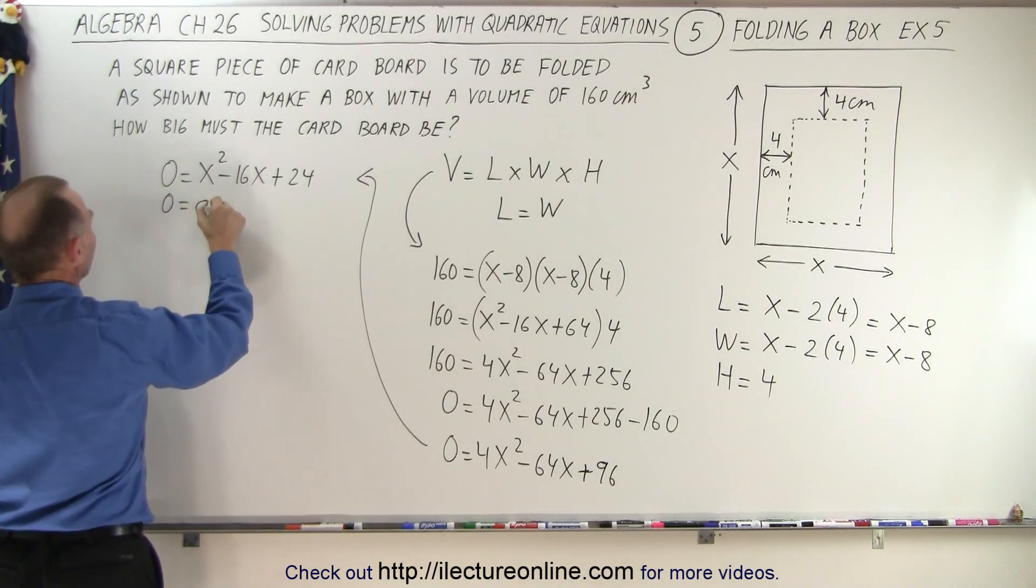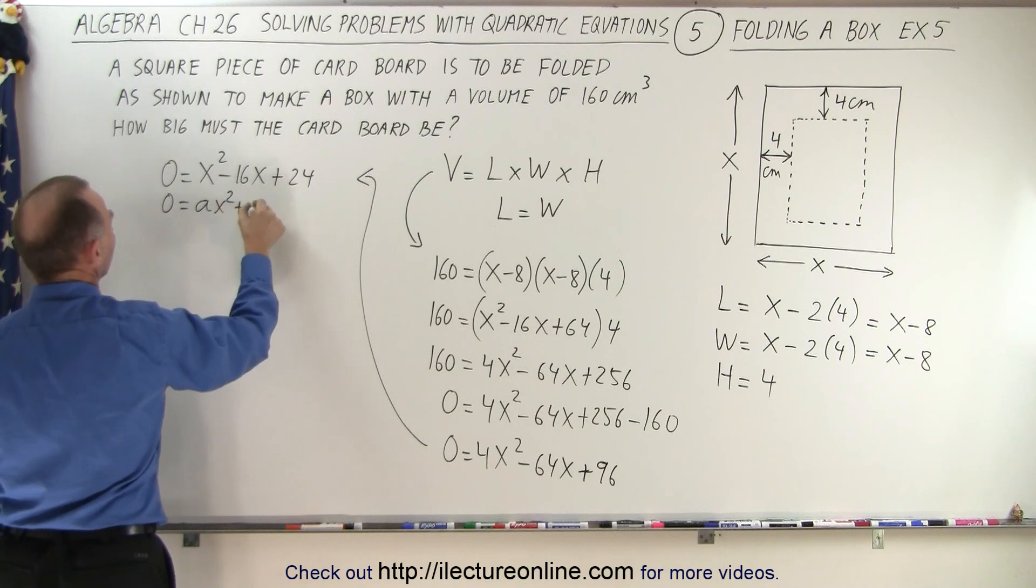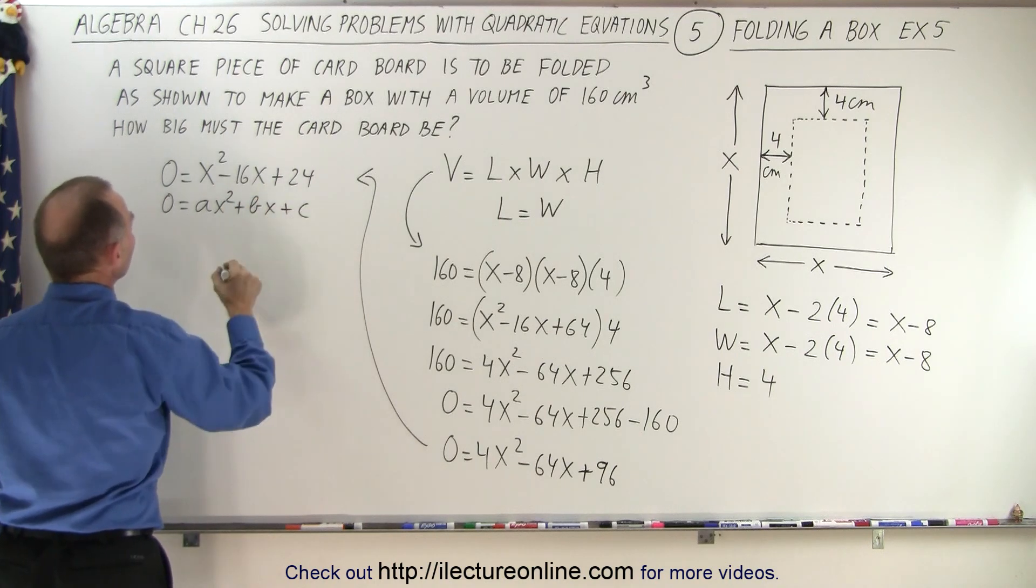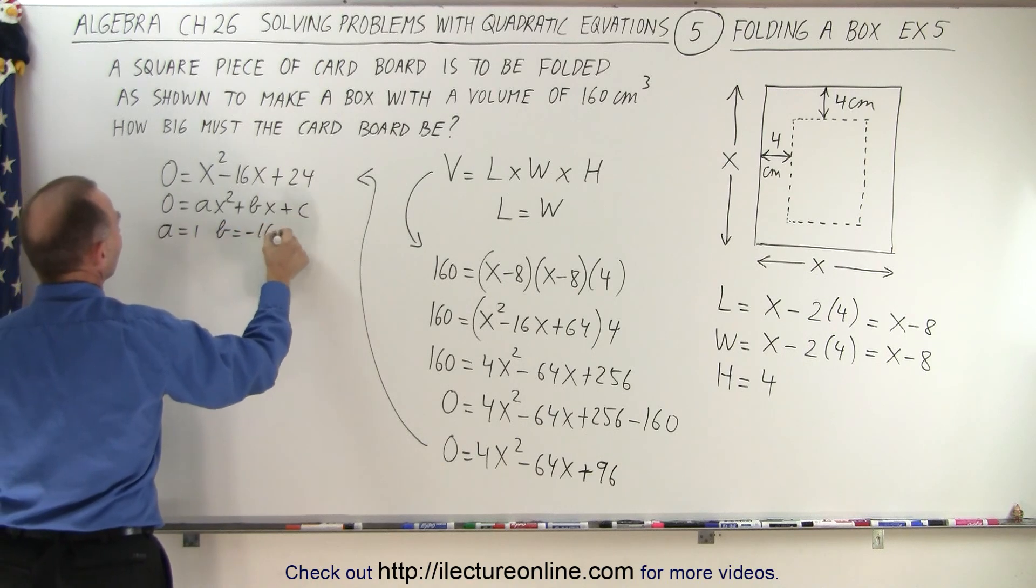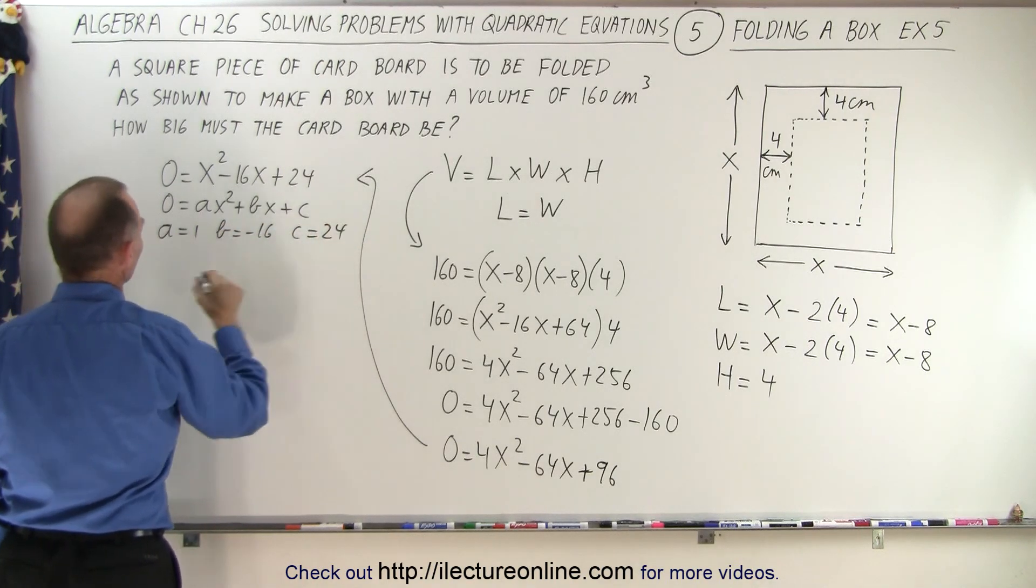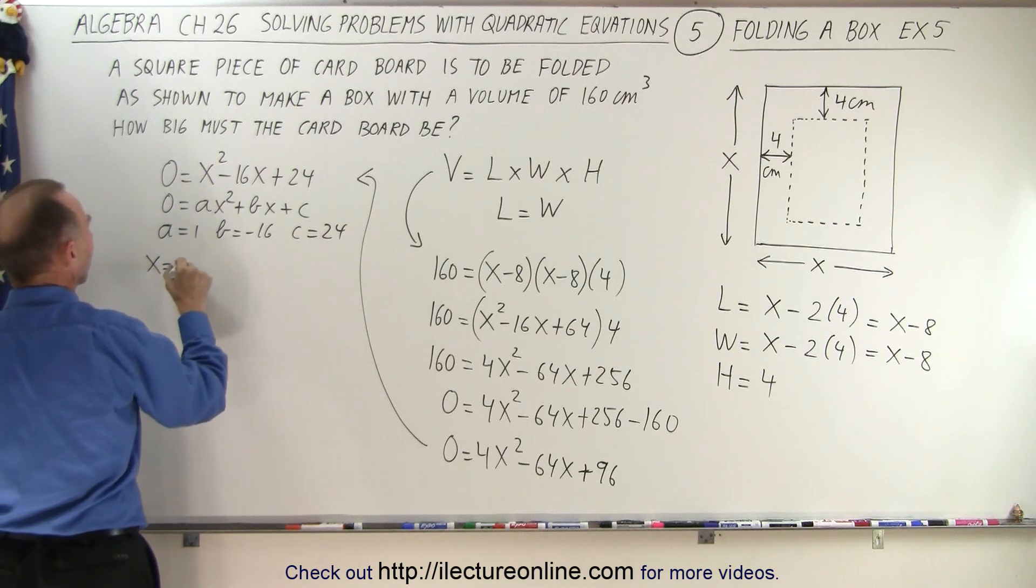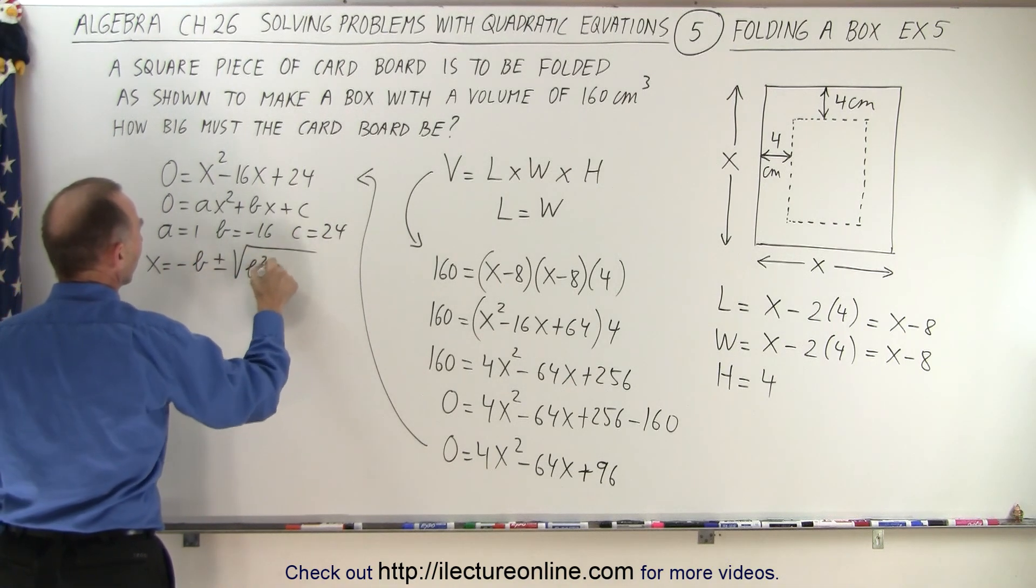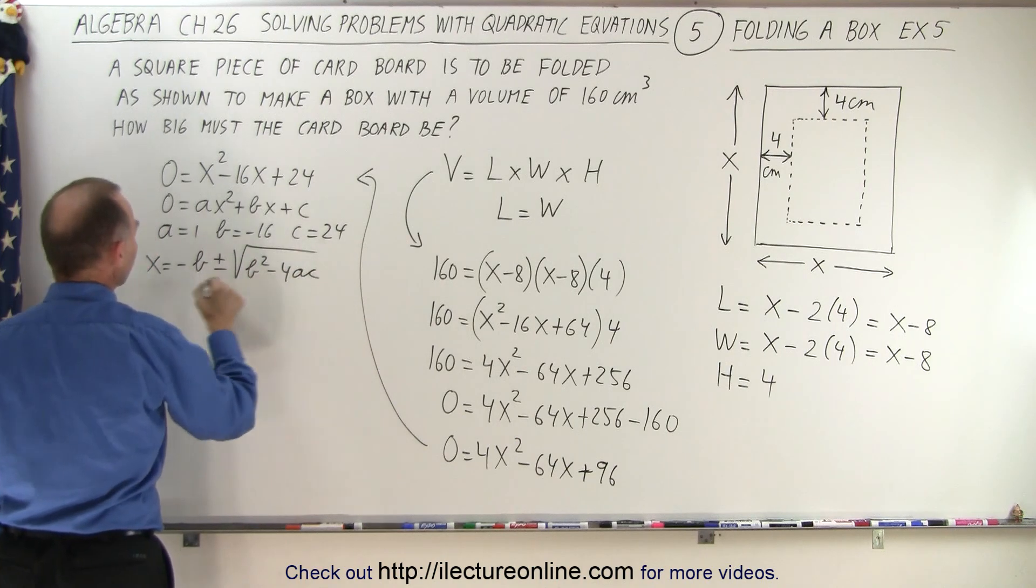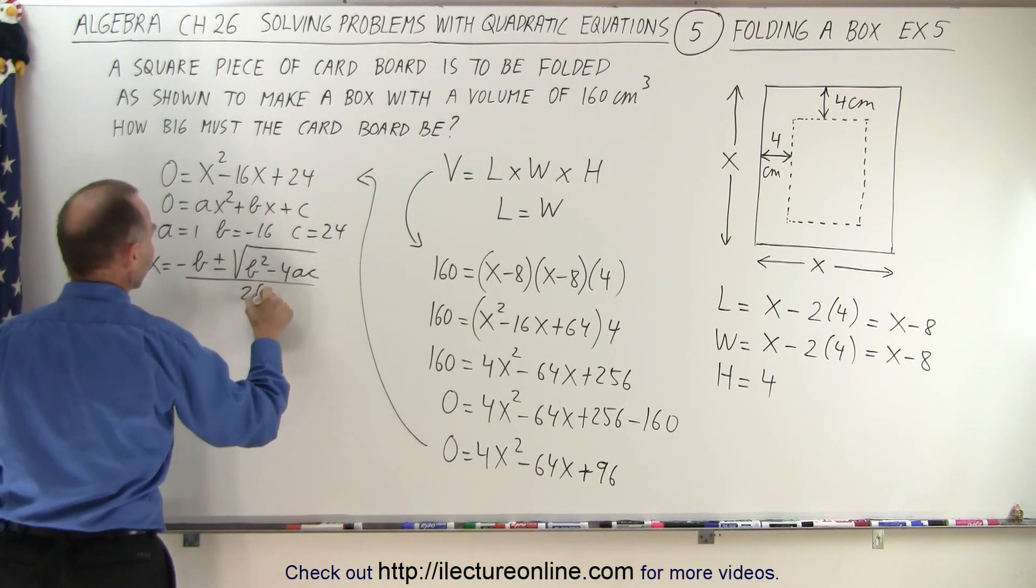So we have 0 equals ax squared plus bx plus c. In this case a equals 1, b equals negative 16, and c equals 24. So that means that x is equal to minus b plus or minus the square root of b squared minus 4ac, all divided by 2 times a.